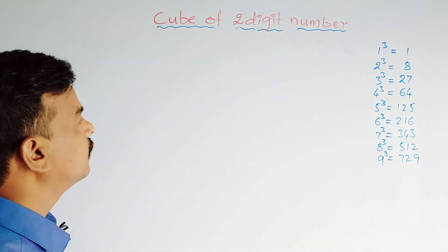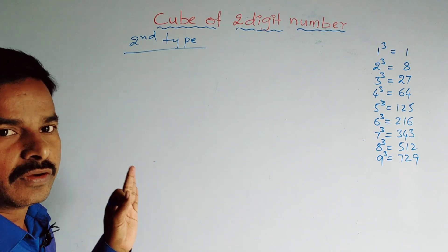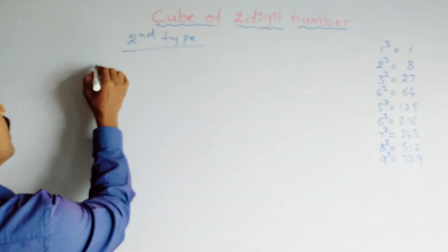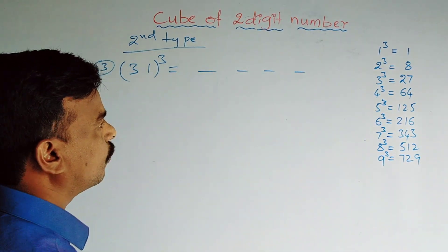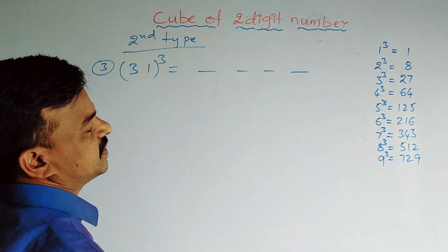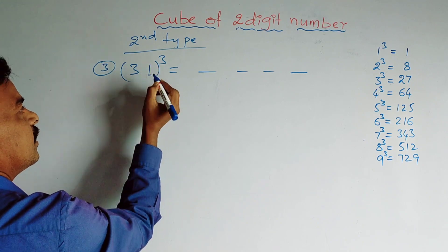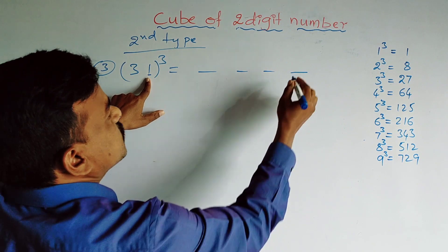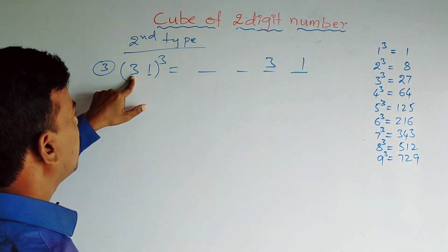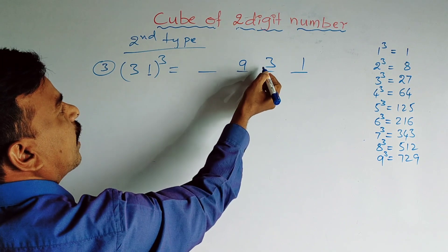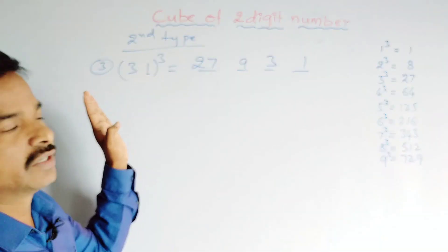Now let us take the second type of numbers — numbers ending with 1. I am taking 31³. I am going to write 4 places for 4 digits. In this type, first take the units digit, which is 1 — write it as it is. Then write the tens digit, 3. Then write 3² = 9. Then write 3³ = 27. We write these in reverse manner: 1, then 3, then 9, then 27.